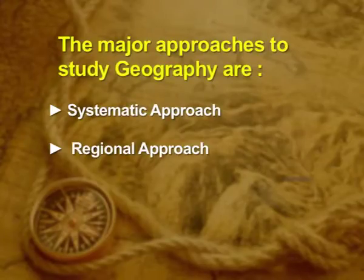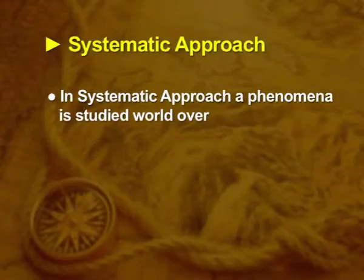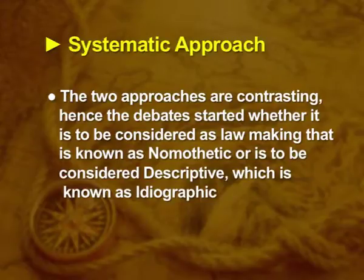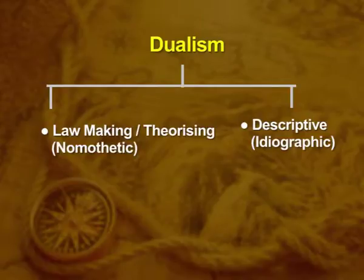There are two major approaches to study geography — these are contrasting aspects, hence geography got subjected to dualism. The two approaches are the systematic approach and the regional approach. In the systematic approach, a phenomenon is studied world over, whereas in the regional approach, all the phenomena of a small region are studied in detail. This debate led to the question of whether geography is law-making, known as nomothetic, or descriptive, known as ideographic — this is the dichotomy in geography.